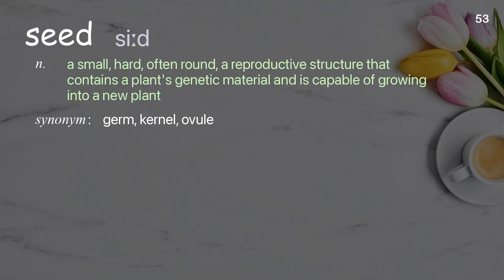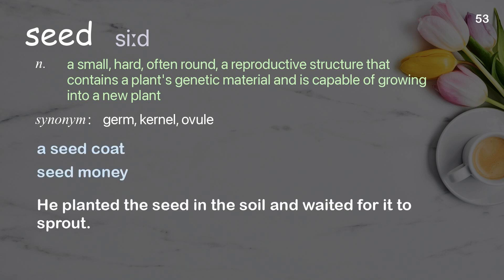Seed: a small, hard, often round reproductive structure that contains a plant's genetic material and is capable of growing into a new plant. Examples: a seed coat, seed money. He planted the seed in the soil and waited for it to sprout.